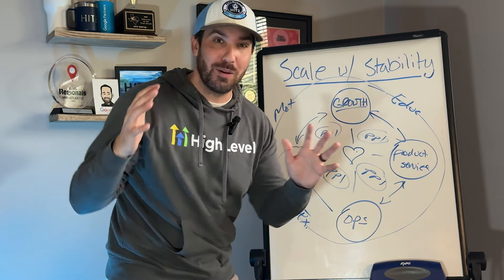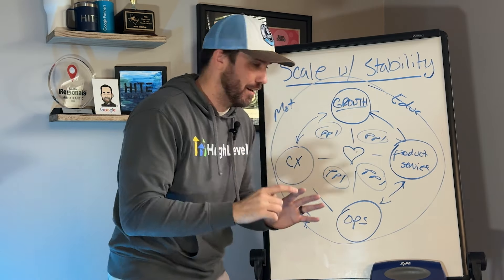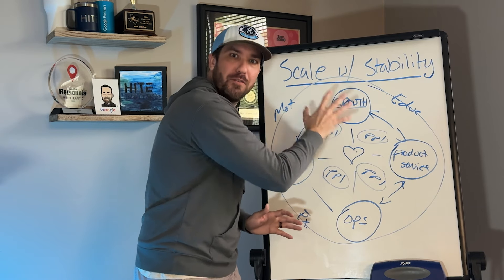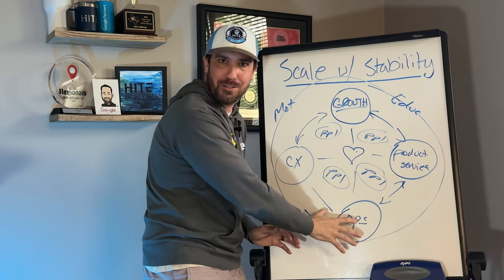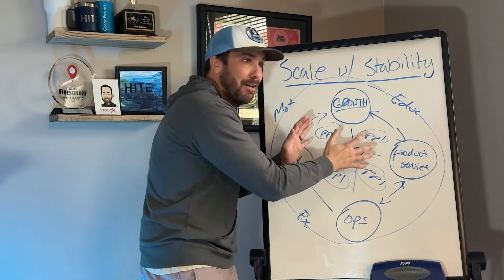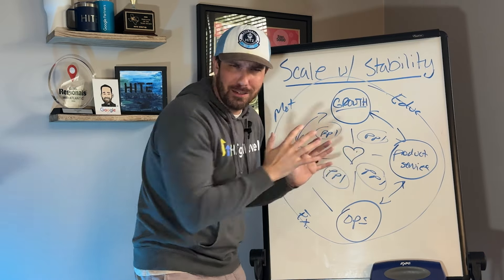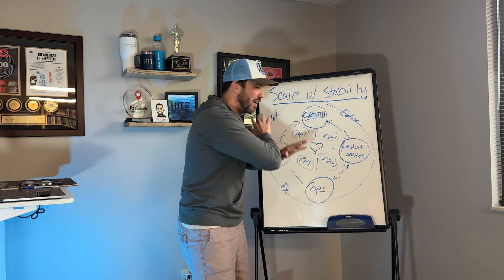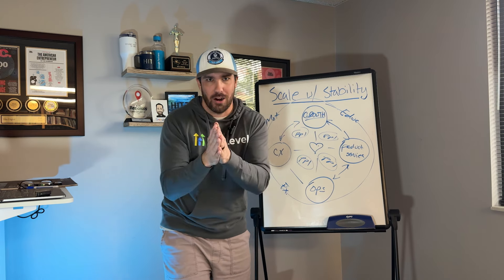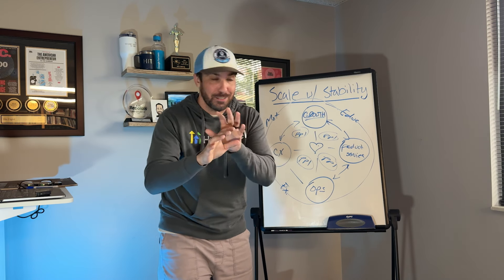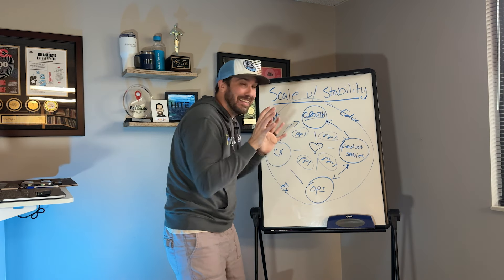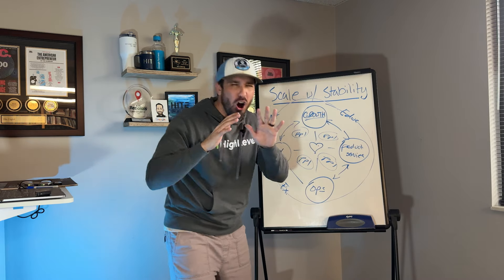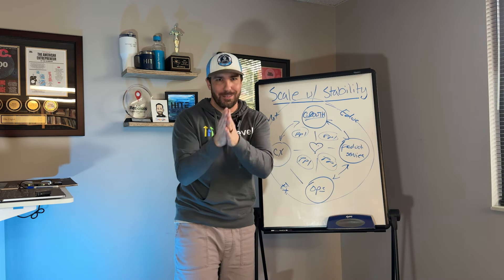Ideally, as you grow and scale, what you end up having is leaders in each one of these — a head of product, a VP of growth, a head of operations, a head of client experience, a head of HR. These are the organizational pillars of every business, regardless of your niche. Thank you guys for taking the time to watch this entire video. We're going to be going over all of this in videos to come.